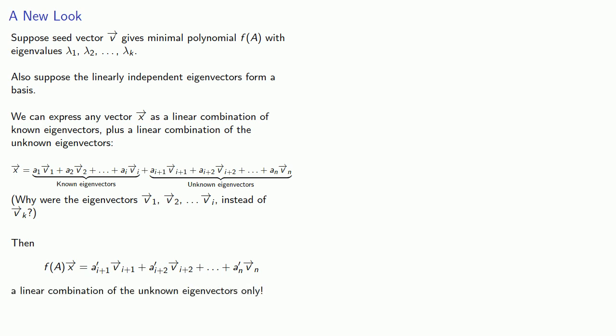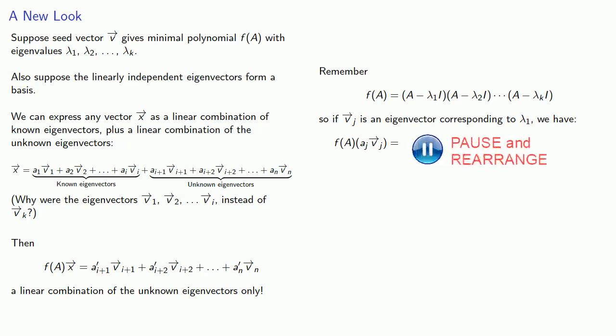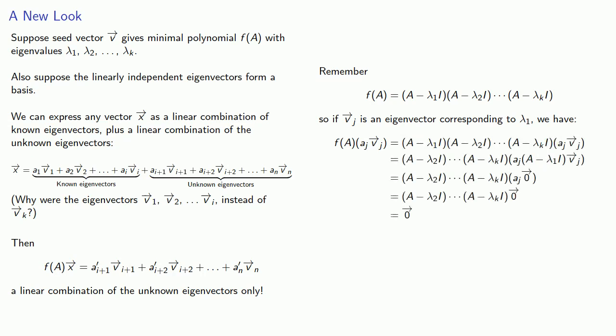Remember that's because our minimal polynomial can be written as a product a minus the known eigenvalues. And the factors can be rearranged. So if I apply f of A to a scalar multiple of any of the known eigenvectors, then I get the zero vector. In other words, f of A applied to my vector x will eliminate the components of x that are linear combinations of the known eigenvectors.